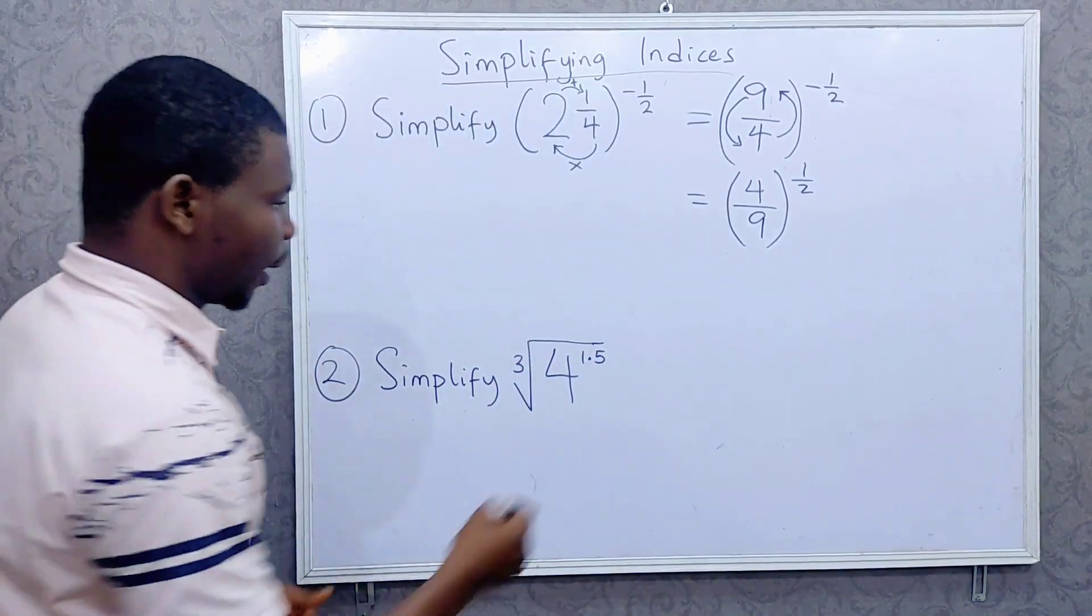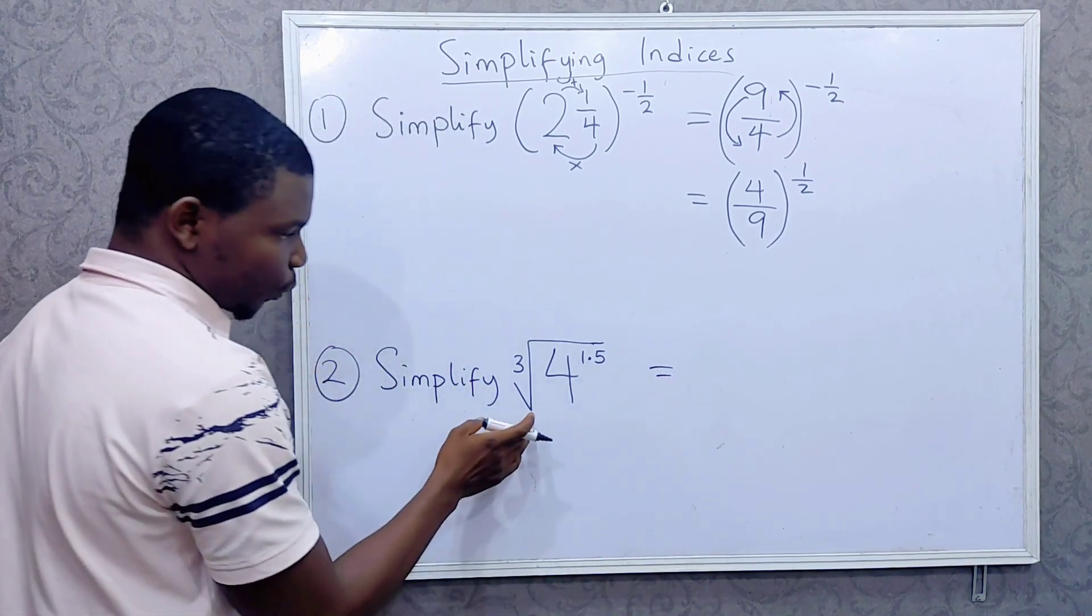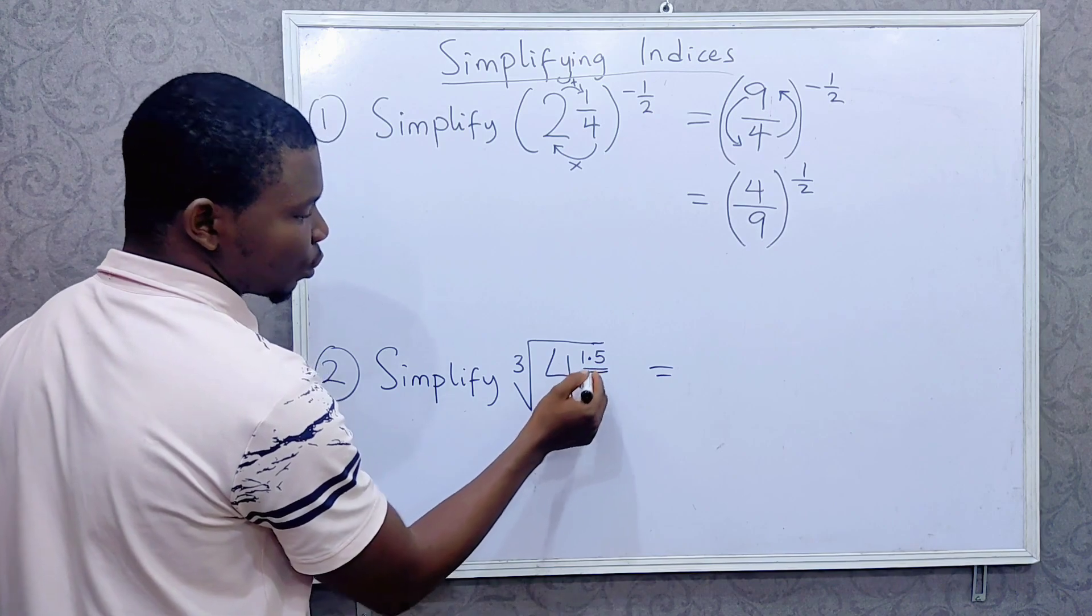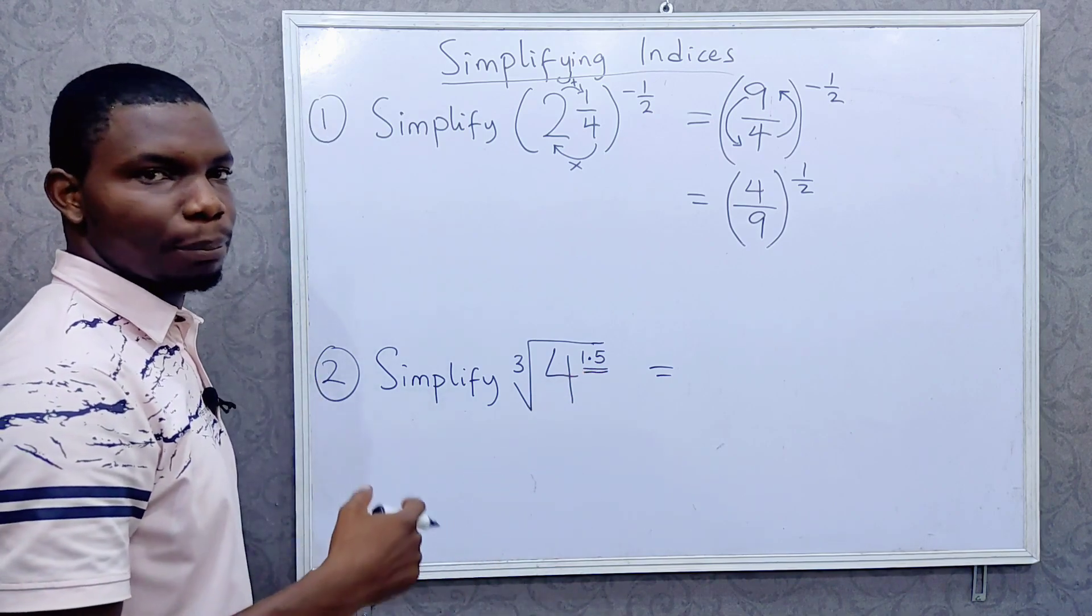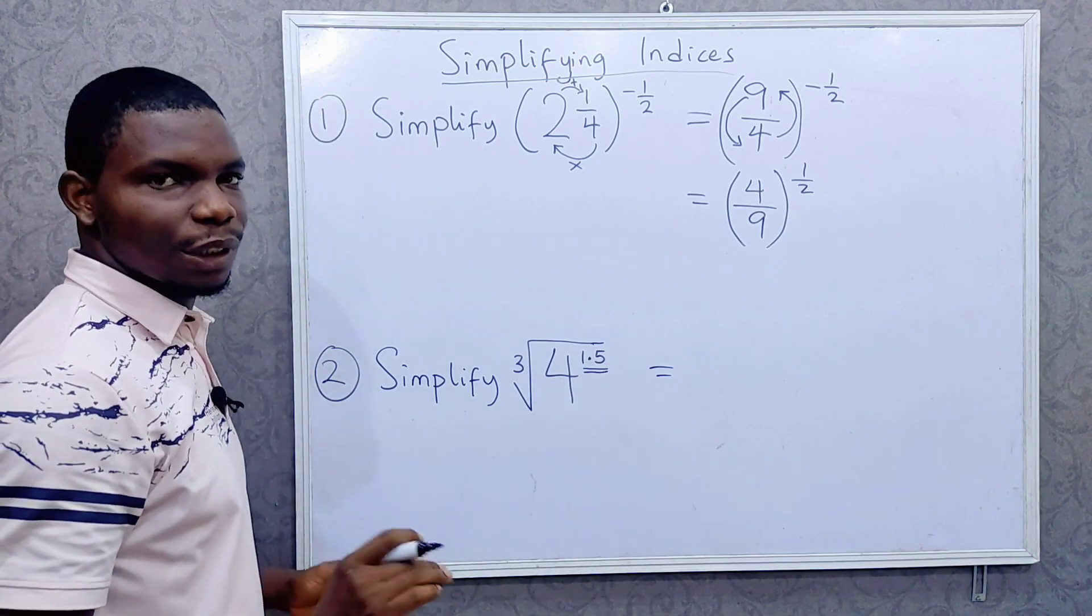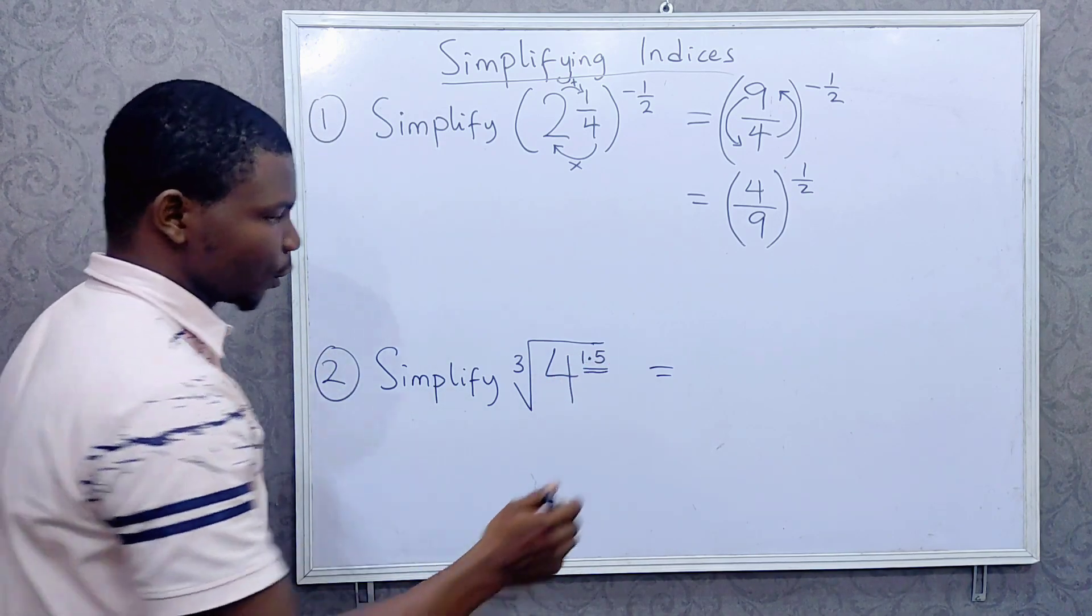So here I would first of all change this. This 1.5, I would change it to an improper fraction. So when you have decimal or a mixed fraction, change them to improper fractions.